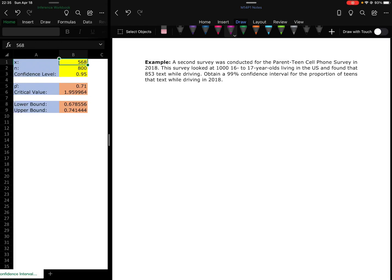All right, another example. We're looking at a second survey now that was conducted for the parent-teen cell phone survey. This one was done in 2018. They looked at 1,000 sixteen to seventeen year olds and found that 853 were texting while driving.